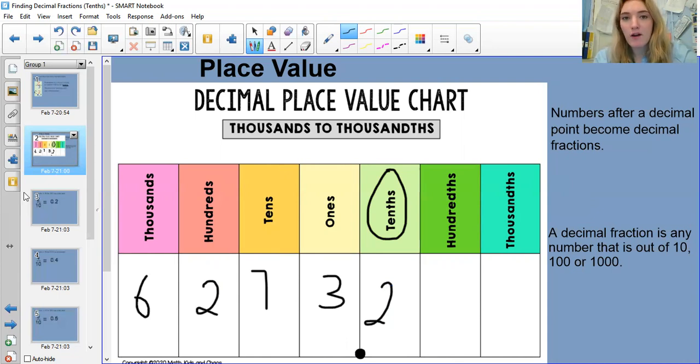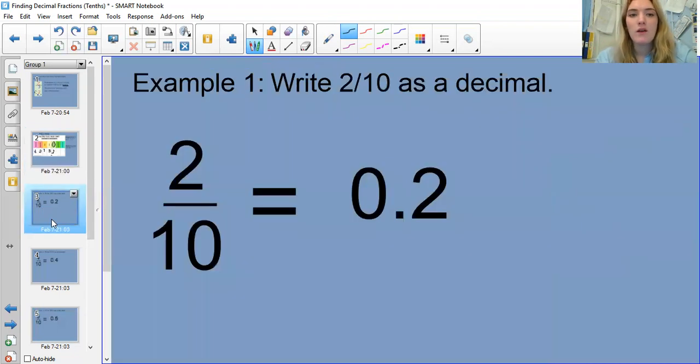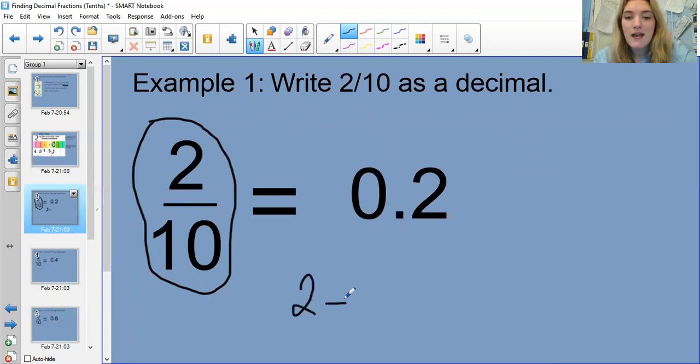We're going to try and convert fractions that we're used to working with into decimals now. Example one, write two tenths as a decimal. Here's our two tenths and I need to write this fraction as a decimal. Essentially what you're doing is you are dividing two by ten. That means if we have our decimal point here, this needs to move back one space. So it becomes point two, and zero is our placeholder. So two tenths divided by ten becomes zero point two.